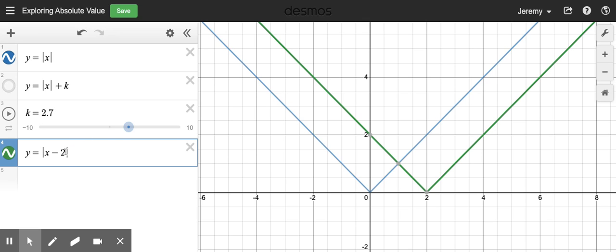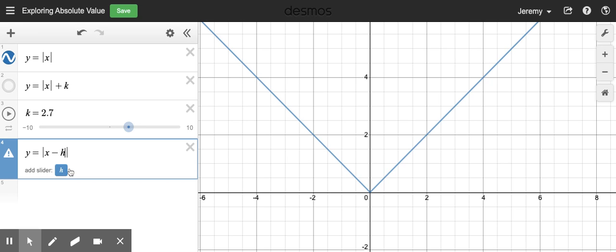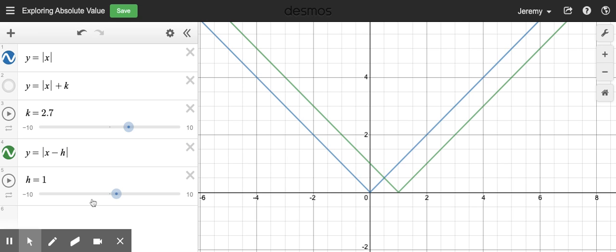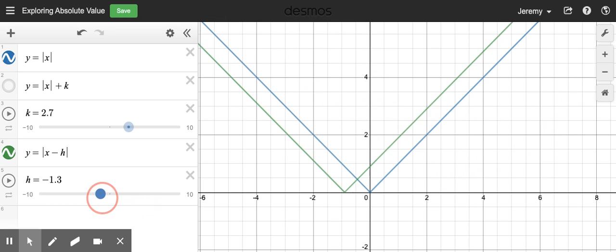So this parameter here, and I'm going to generalize it just like I did in the last time, I'm going to call it h and add the slider. When I subtract a positive number, it's going to cause movement in the positive horizontal direction. And when I subtract a negative number, or add a number, it's going to cause a horizontal translation in the negative x direction.